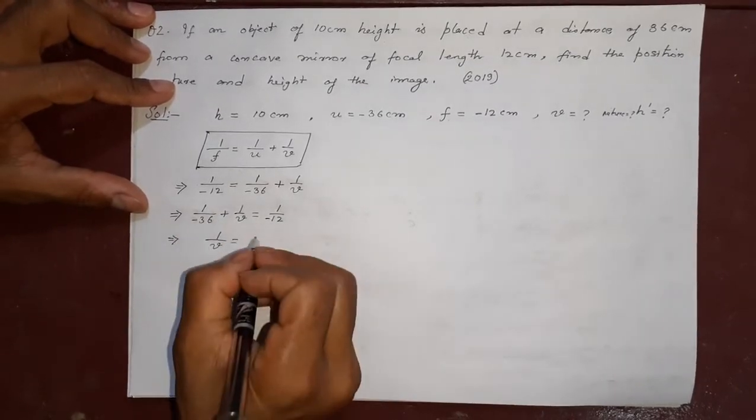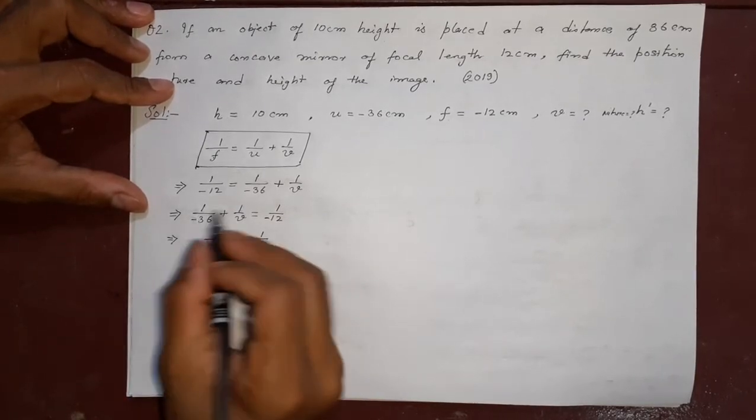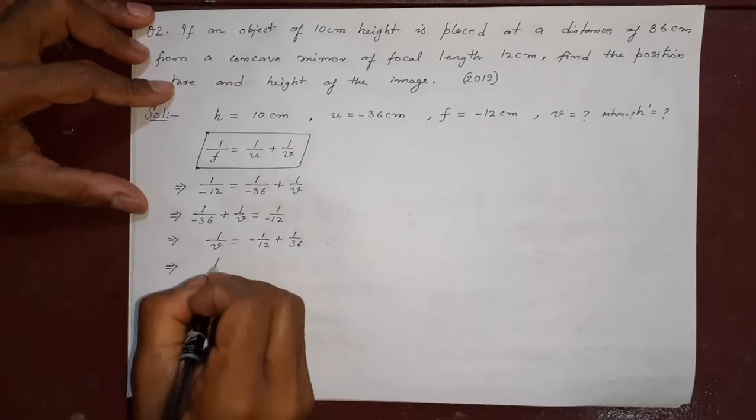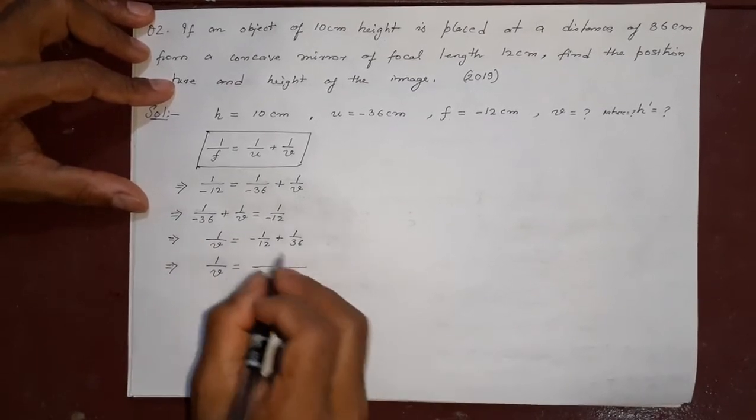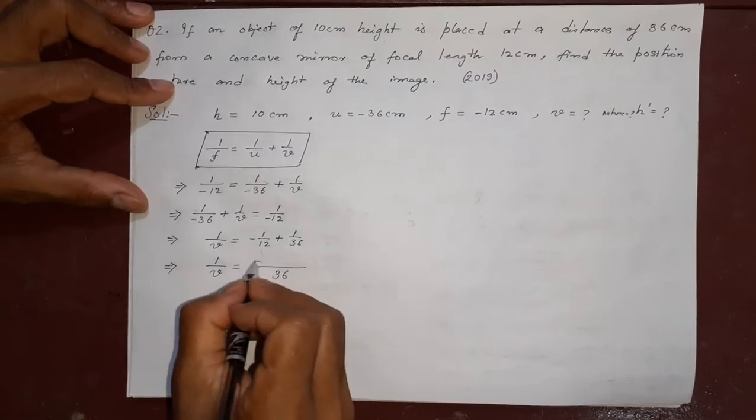1 by v equal to transfer there 1 by 12. This minus sign can be kept up, this will go here and become plus. 1 by v equal to 36 and 12, LCM is 36. 12 threes are 36, so 1 threes are 3 minus.